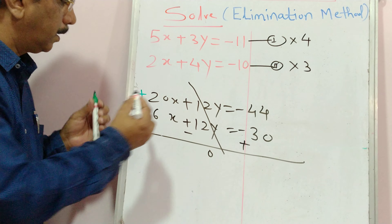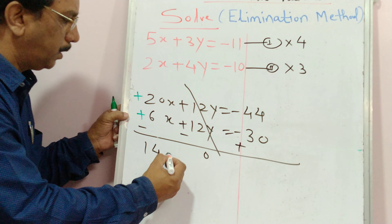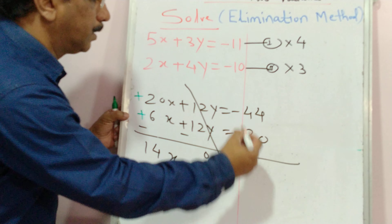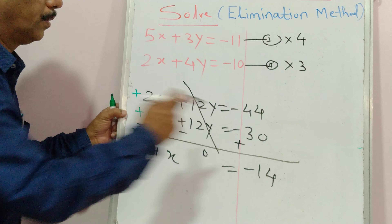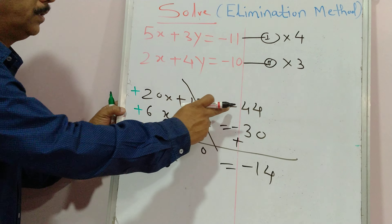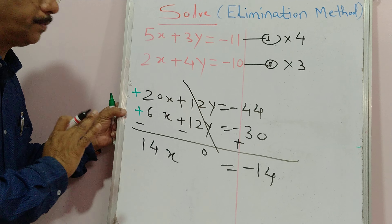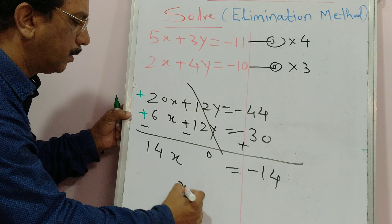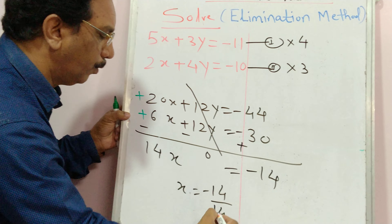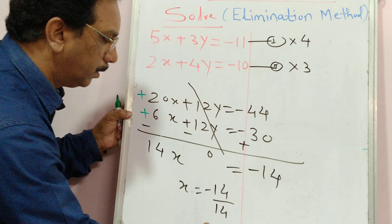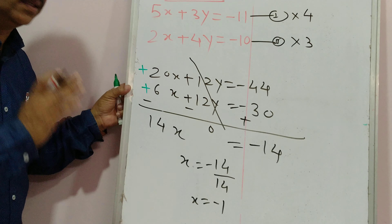After elimination of y: 20x minus 6x gives 14x, which equals minus 44 minus (minus 30), giving minus 14. So 14x equals minus 14, therefore x equals minus 14 divided by 14, and the answer is x equals minus 1.